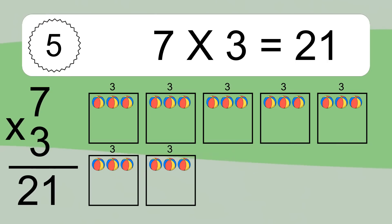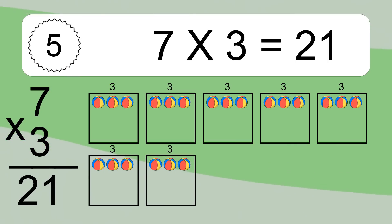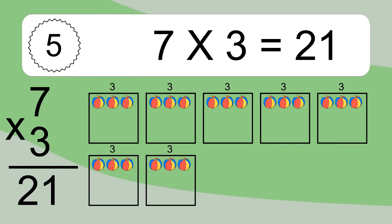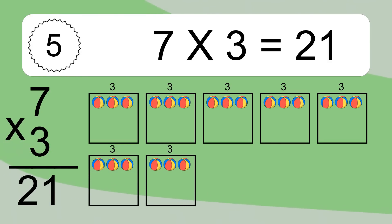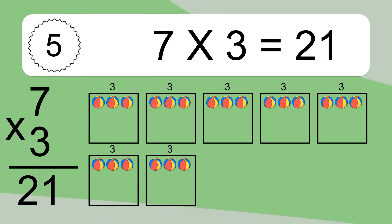We have 7 boxes and each box has 3 colorful balls inside. If you count all the balls in all the boxes together, you will have 7 times 3 balls. This equals 21 balls.